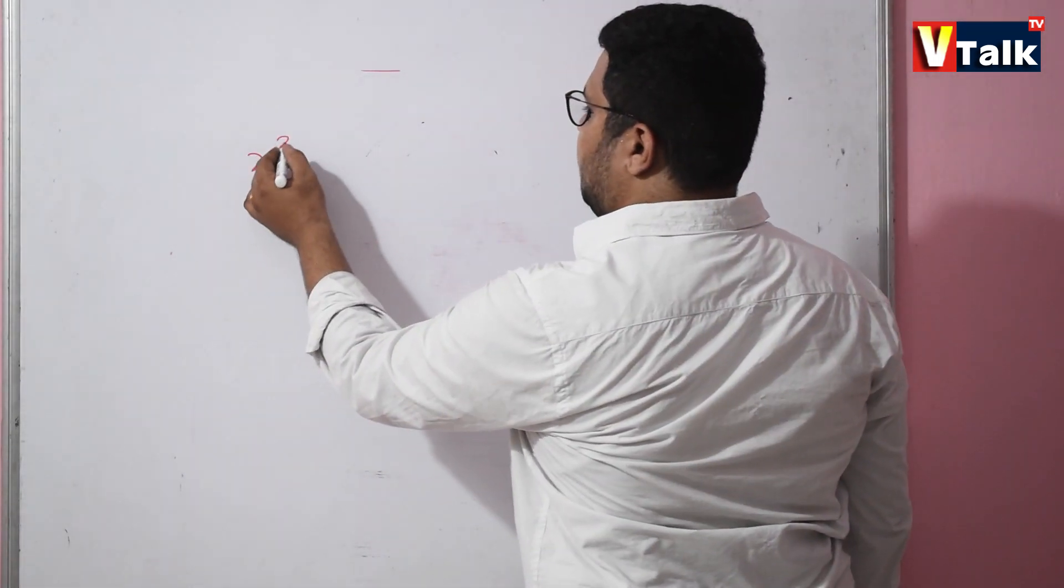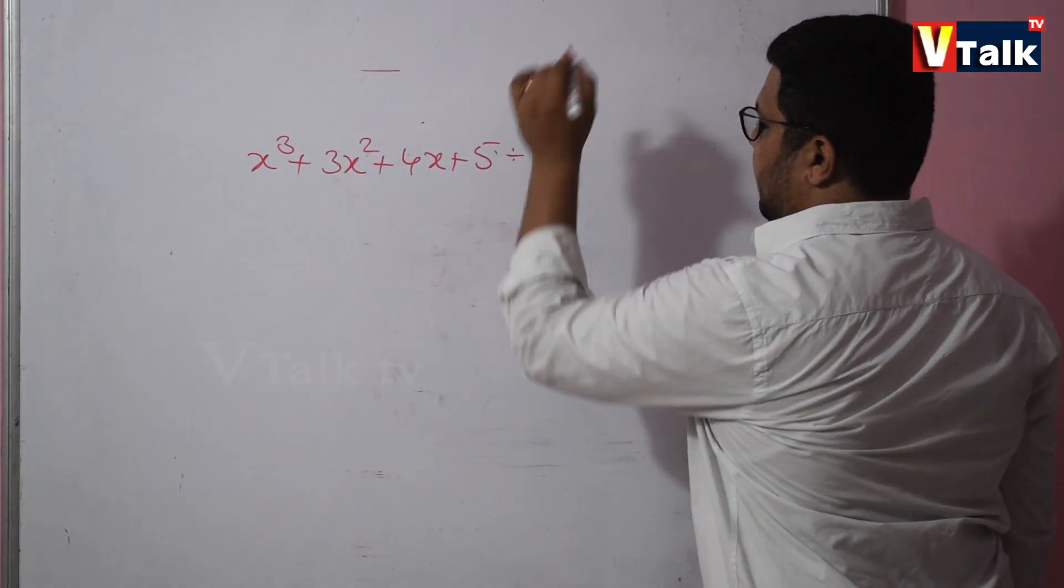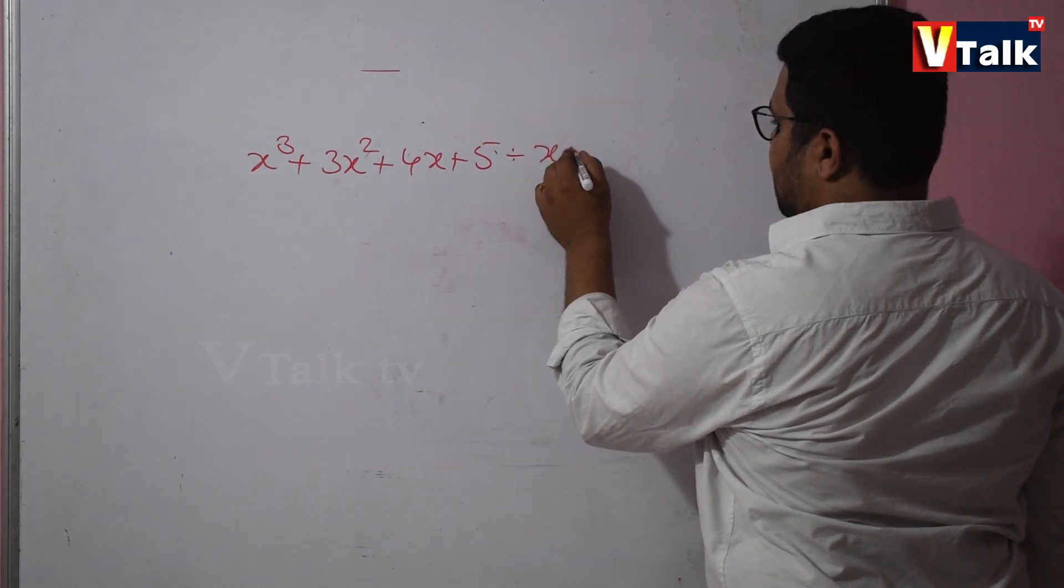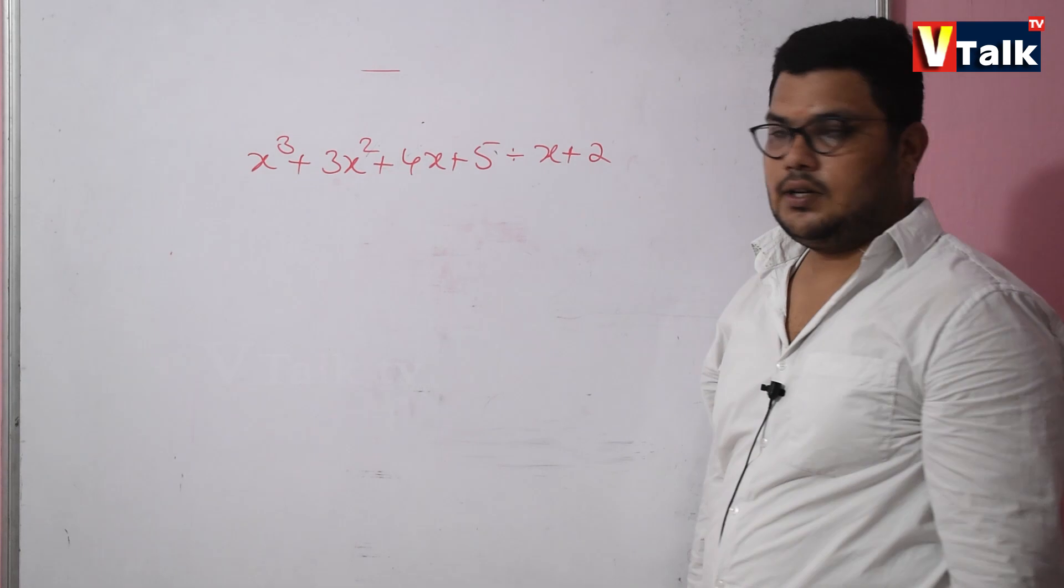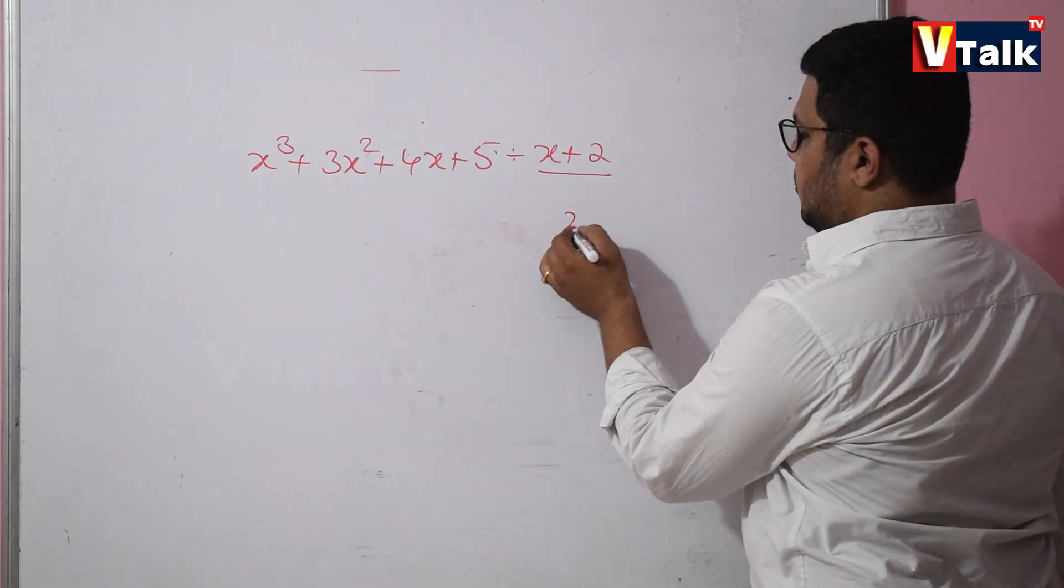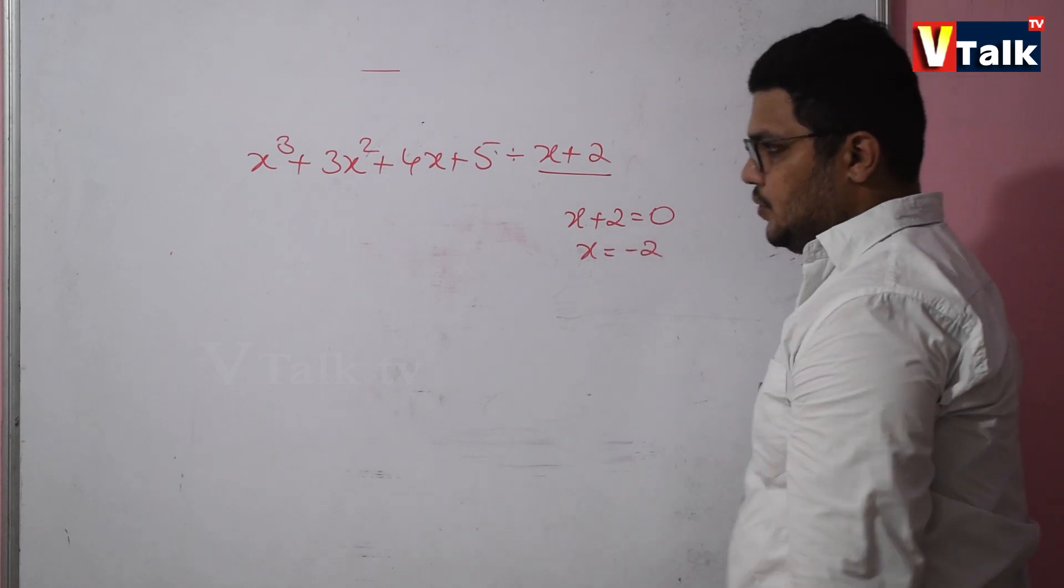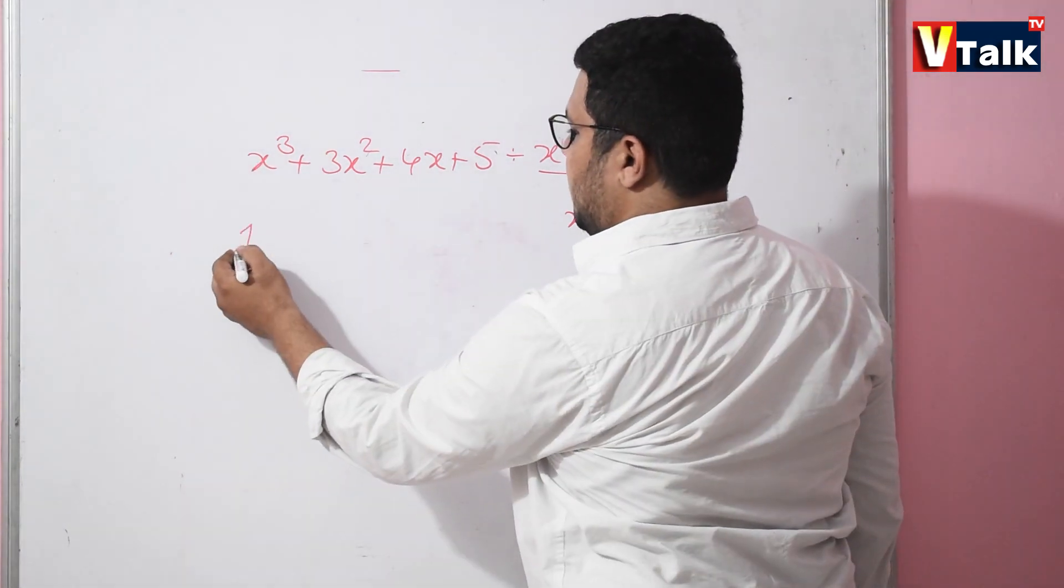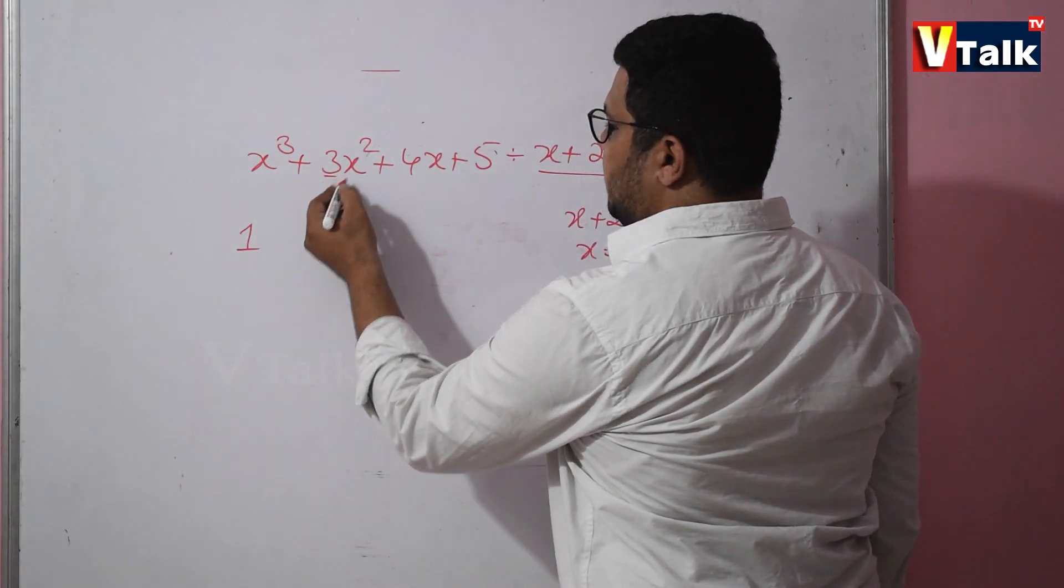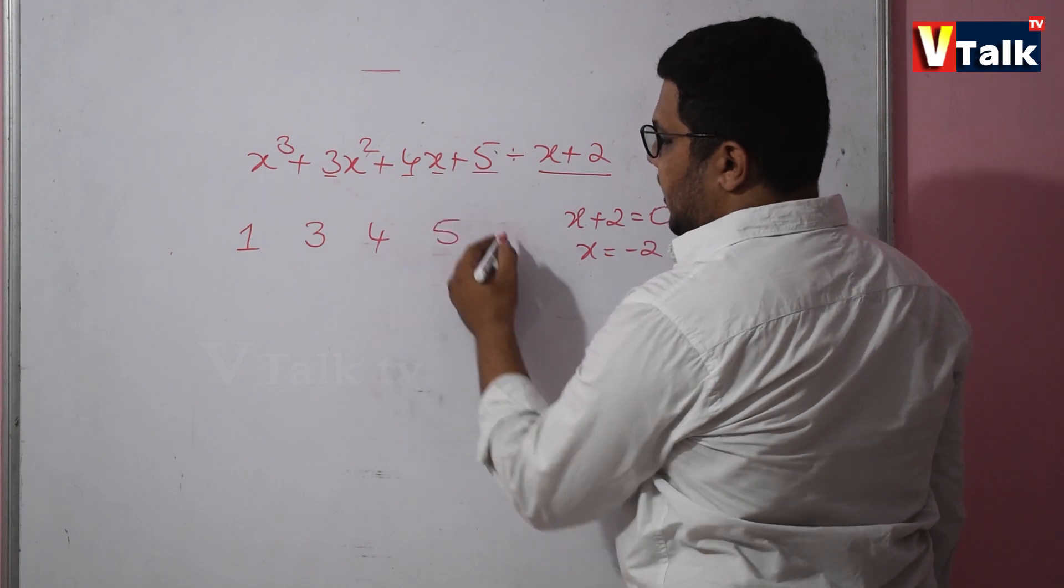x cubed plus 3x squared plus 4x plus 5 divided by x plus 2. We set x plus 2 equal to 0, so x equals minus 2. Now write the coefficients: x cubed coefficient is 1, x squared coefficient is 3, x coefficient is 4, and the constant is 5.